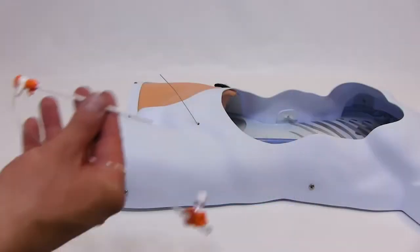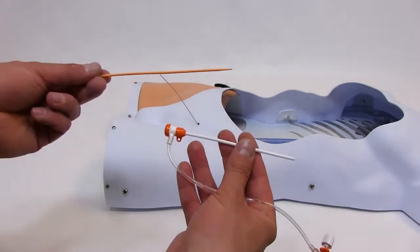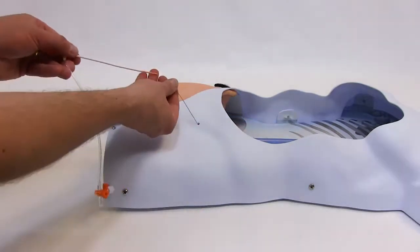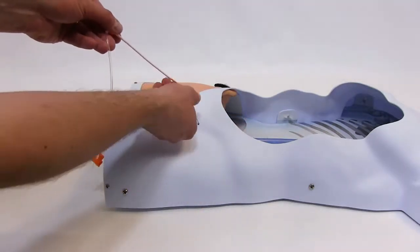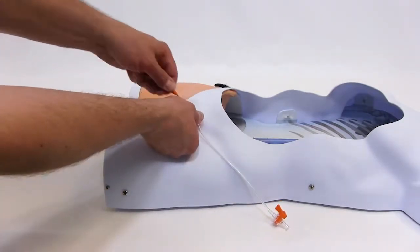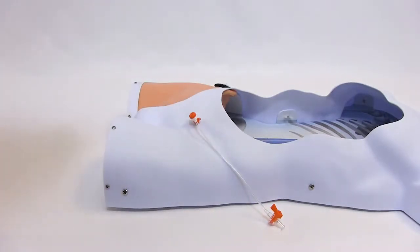Prepare a 7 French introducer sheath by inserting the dilator into the sheath, sliding the dilator-introducer sheath combo over the guide wire, and advancing it until the sheath is flush with the body model's surface. Remove the guide wire and dilator.